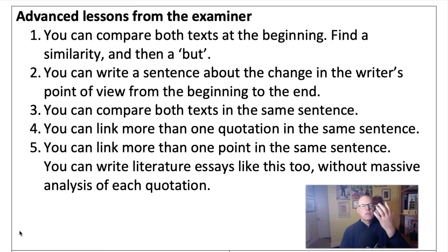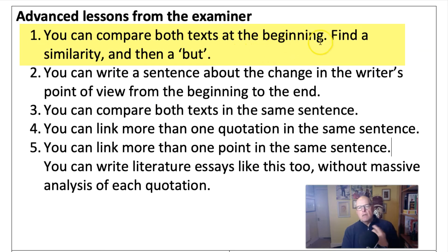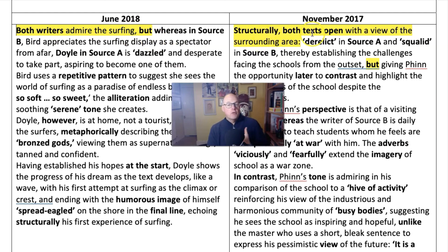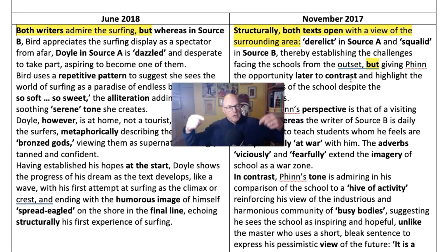Five things that will make your writing even better for this question. Tip number one: you can compare both texts at the beginning — find a similarity in the beginnings, but then hit the examiner with a 'but.' We see this when examiners were more ambitious nearly four years ago: 'Both writers admire the surfing' — similarity — 'but.' And structurally, both texts open with a 'but.' So if you are able to read both texts and then open with this kind of summary similarity, you can follow it on with a 'but' brilliantly.